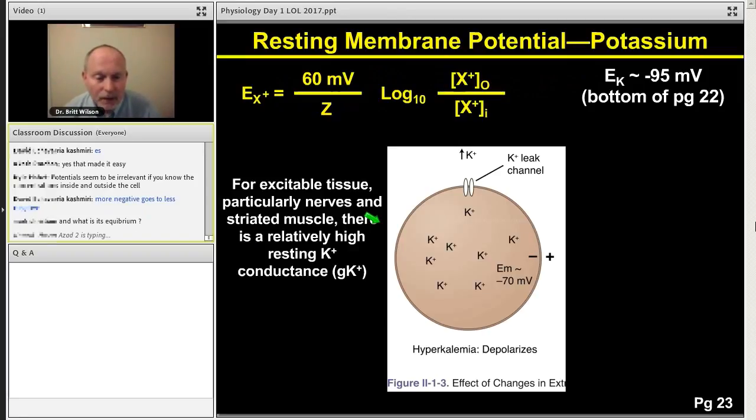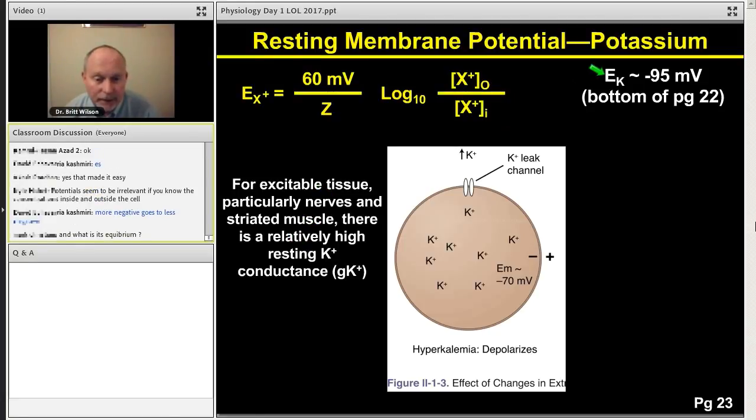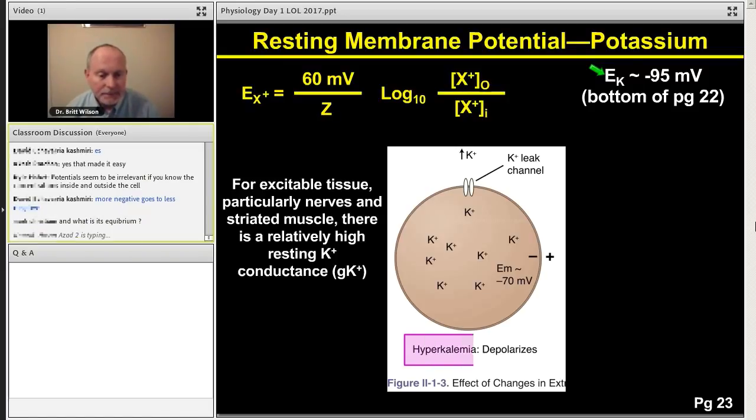All right. Here we go. We've got a cell, excitable tissue. You have a high resting potassium conductance. Here's equilibrium for potassium. Hyperkalemia, illustrated here, increased extracellular potassium. Hyperkalemia. Always remember, emia means blood. Hyperkalemia depolarizes, which acutely will increase excitability. Let's see why that is.